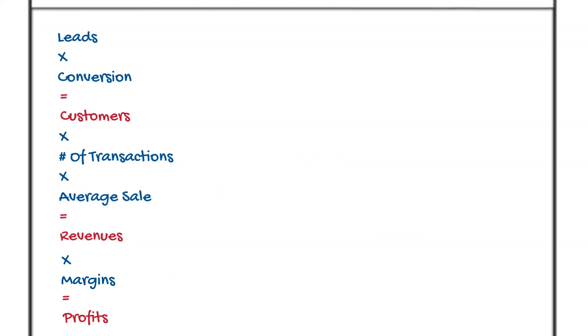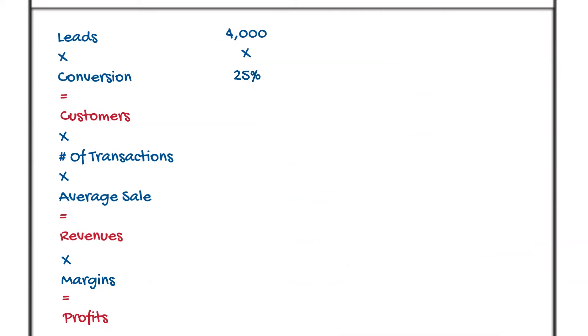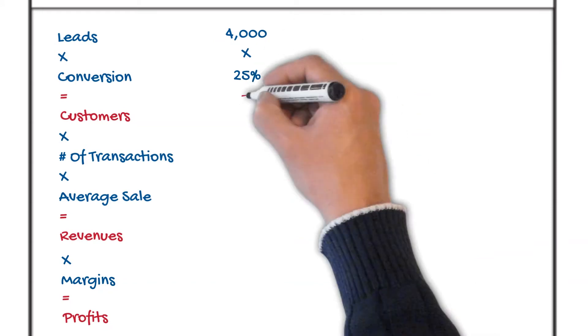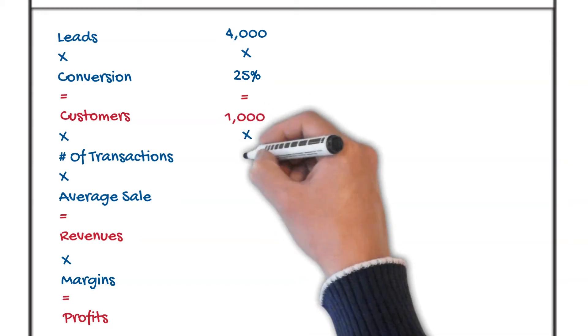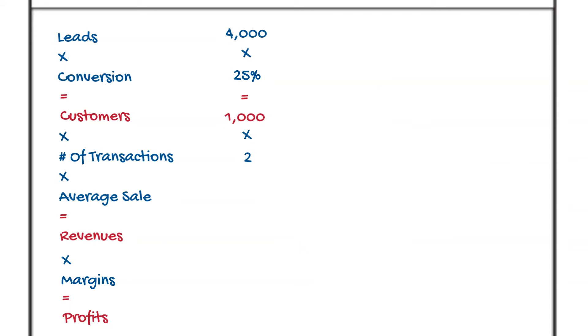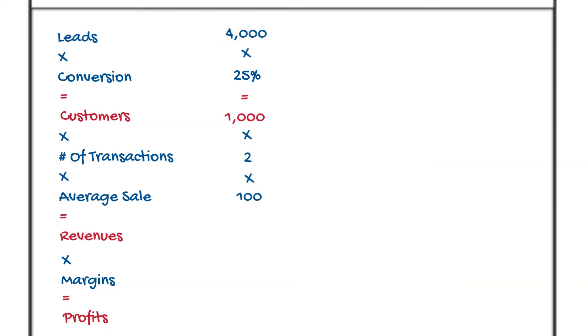Let's put some numbers in to make it make sense. Let's imagine in your little business you had 4,000 potential customers last year. You sold to one in four of them, or 25%. That means you've got 1,000 customers in your little business. Now, let's pretend that on average they came back twice a year to buy from you. Some bought 100 times, some bought once and you never saw them again, but the average was twice. And again, average sale.